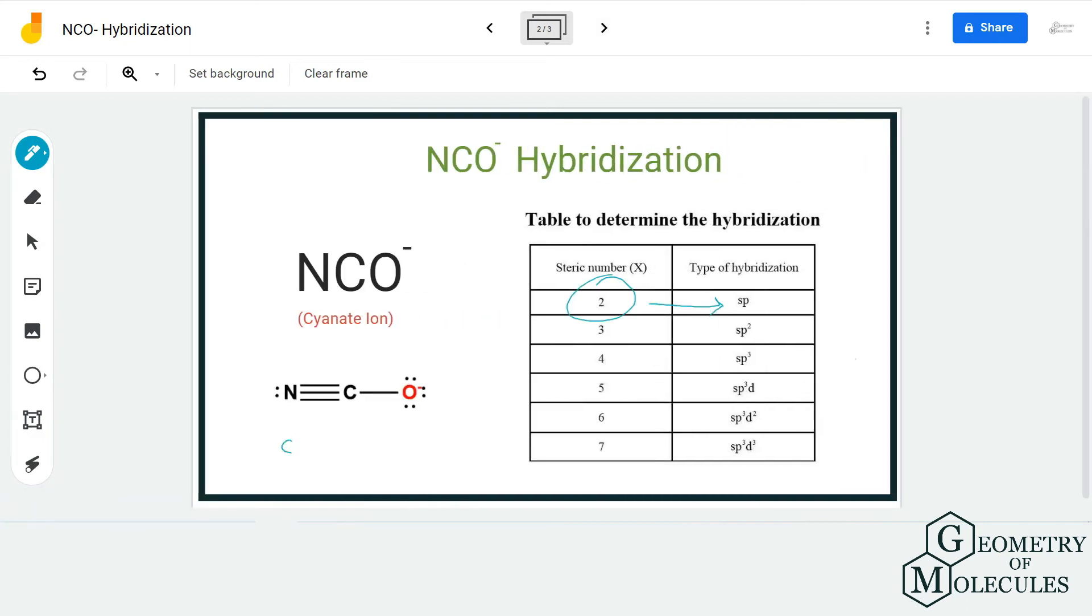This means that the carbon atom has SP hybridization in NCO minus ion, and this is the hybridization of the molecule as well. The carbon atom will have one hybrid s orbital and one hybrid p orbital to accommodate the bonding pairs of electrons.